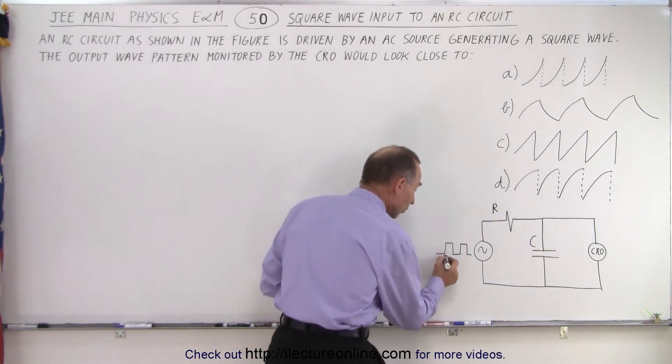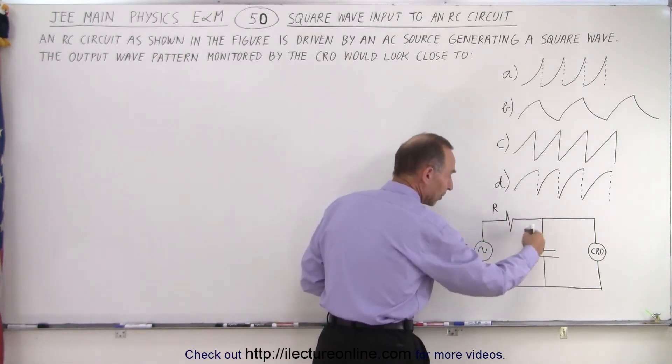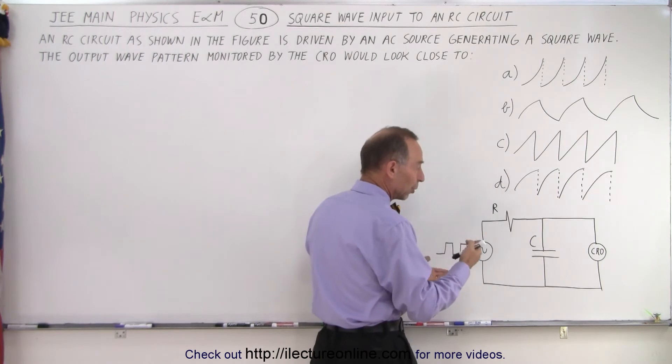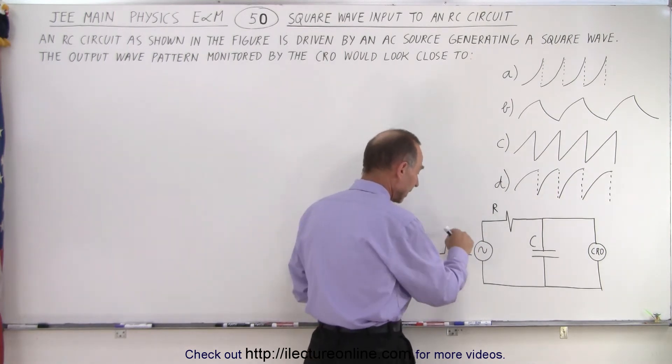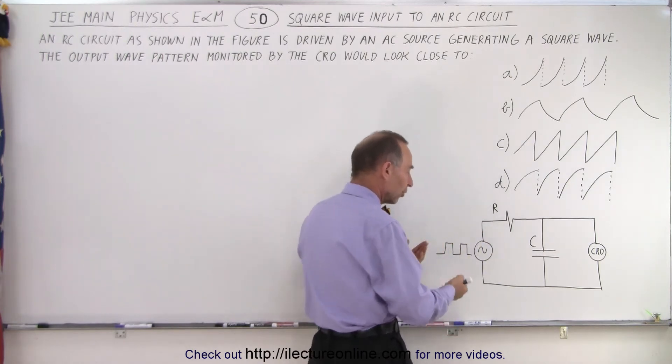So as soon as the wave goes high, we push current through the circuit, the capacitor begins to charge up and as it has more and more charge, the voltage will then climb. And then as the square wave goes down, either it reverses or it goes to zero,